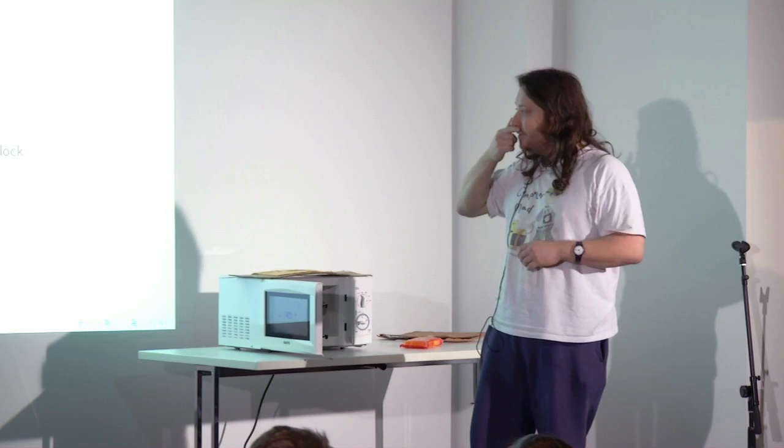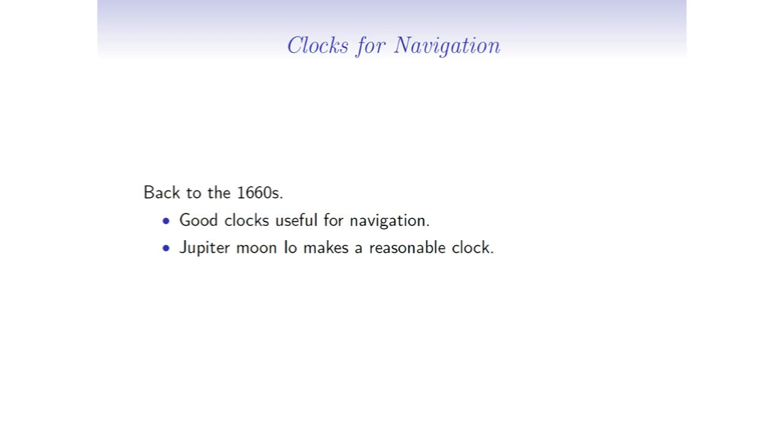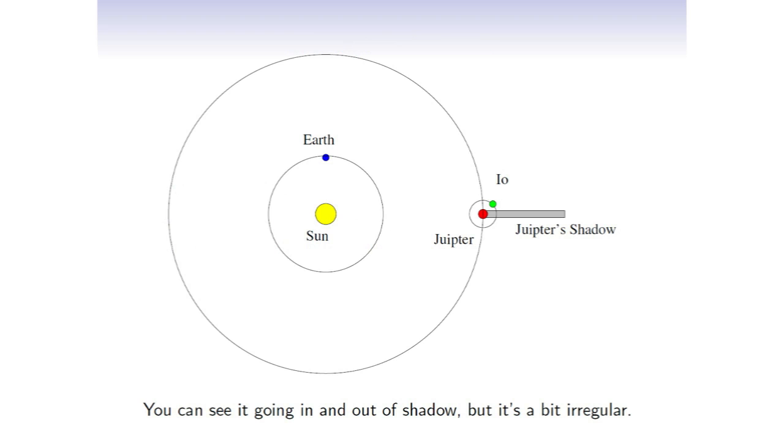But how did they know the speed of light already in 1860, because they didn't have microwave ovens? What they did was there were some people trying to do navigation, and they needed to know what the time was. And they were looking at Jupiter, because Jupiter has a moon called Io, which goes round and round and round. And very often Io moves round into Jupiter's shadow and back out again. And if you're looking from the Earth, what you see is Io blinks out and blinks back in again.